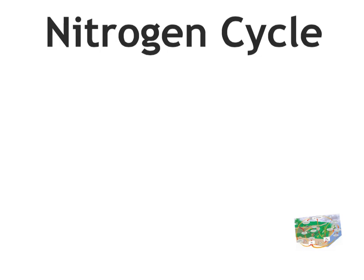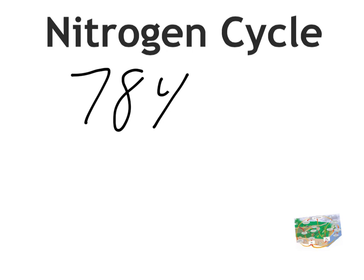This video is designed to teach you about the nitrogen cycle. Before we get into the cycle itself, there are a few things you have to know about nitrogen for this to make sense. For starters, the atmosphere around us is 78% nitrogen, which means of all the cycles we're talking about, this is probably the most abundant thing.